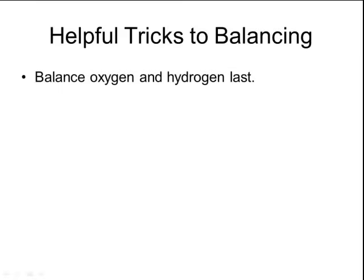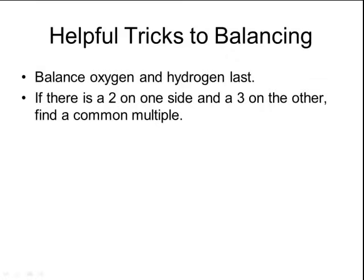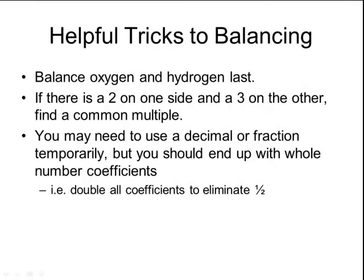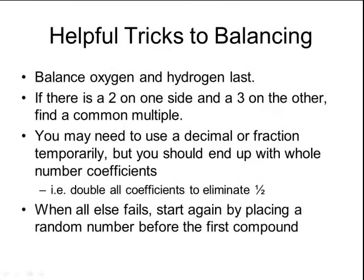There are a few helpful tricks to balancing chemical equations. It's easiest to balance oxygen and hydrogen atoms last, as they often work themselves out as you balance the other elements. If you have two atoms on one side and three on the other, find a common multiple — the least common multiple of two and three is six, so make the atoms on both sides equal six. You may temporarily use a decimal or fraction, but then double all coefficients to get whole numbers. If you get stuck, try picking a random number before the first compound and start the balancing process over.